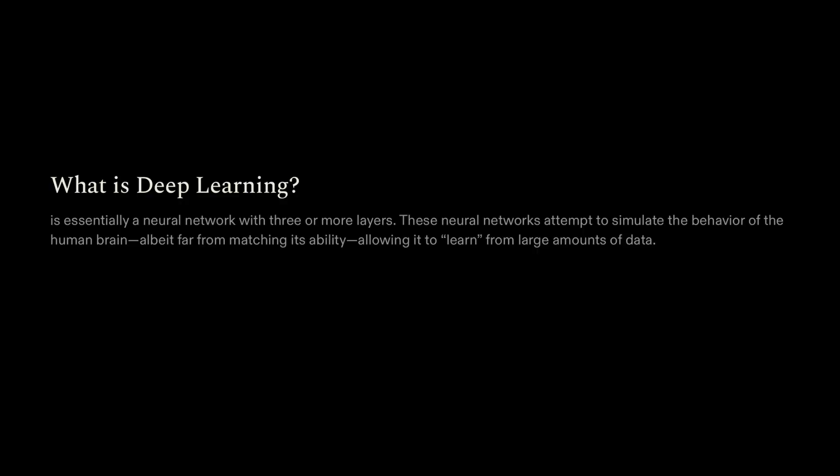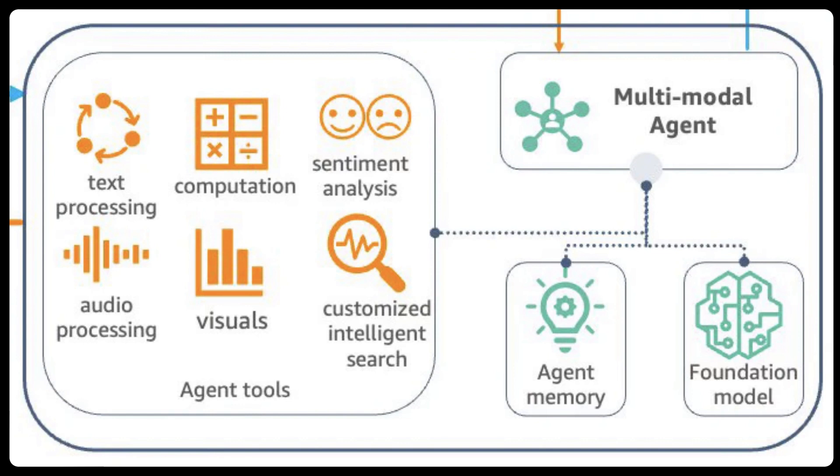What is deep learning? Deep learning is essentially a neural network with three or more layers. These neural networks attempt to simulate the behavior of the human brain, allowing them to learn from large amounts of data. With deep learning, there are multiple layers of data the AI is accessing, creating and inferring patterns and conclusions — like the human brain — and it's able to use data that isn't structured, like on a spreadsheet.